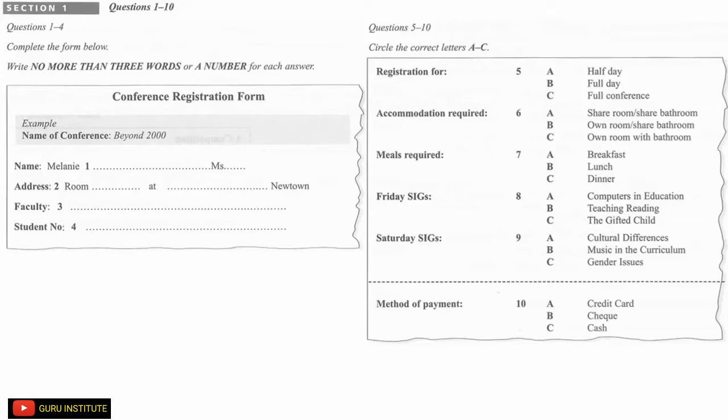You will see that there is an example which has been done for you. On this occasion only, the conversation relating to this will be played twice. The student says she wants to register for the Beyond 2000 conference, so you write the words Beyond 2000. Now we shall begin.